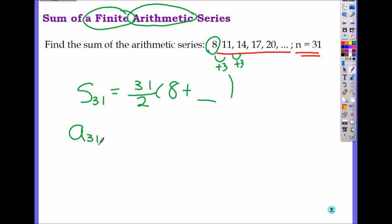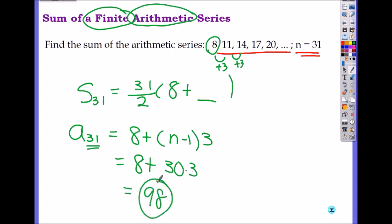We can use the explicit equation. So what's the explicit equation? The first term plus N minus 1 times the difference. What's the difference? 3. And what is N? 31. So we do 8 plus 31 minus 1, which is 30 times 3. So we get 98. So then we put the 31st term here, which will be 98.